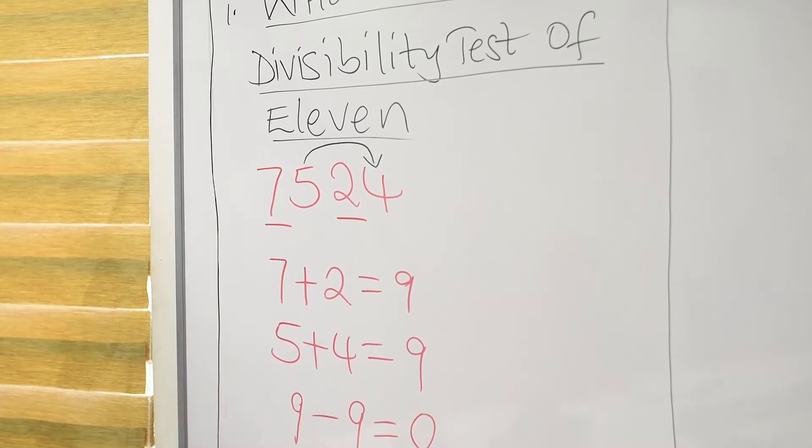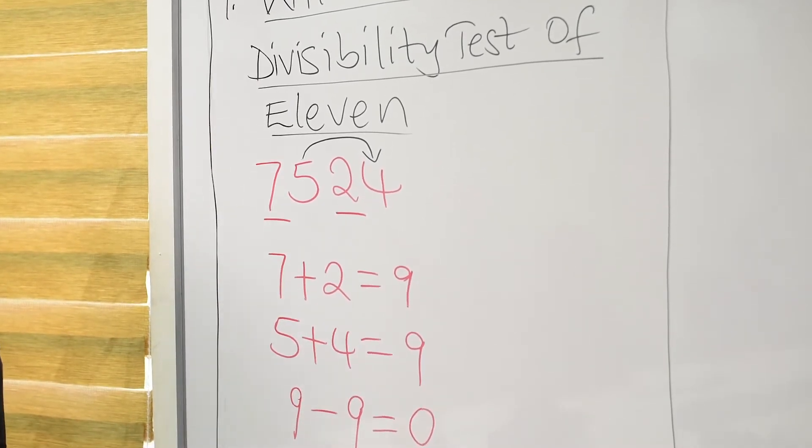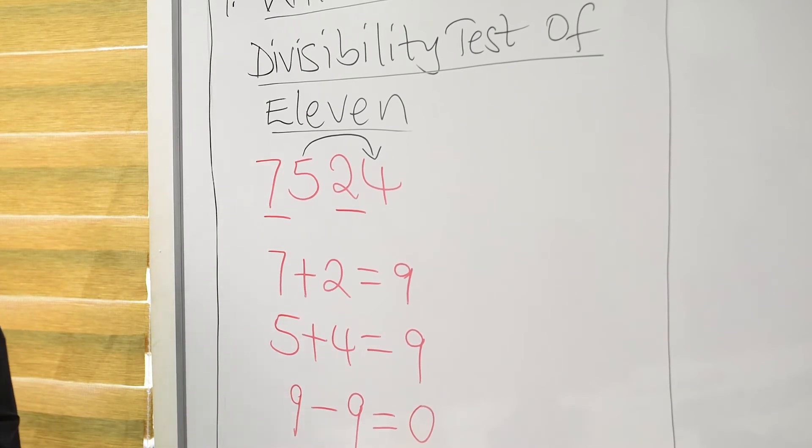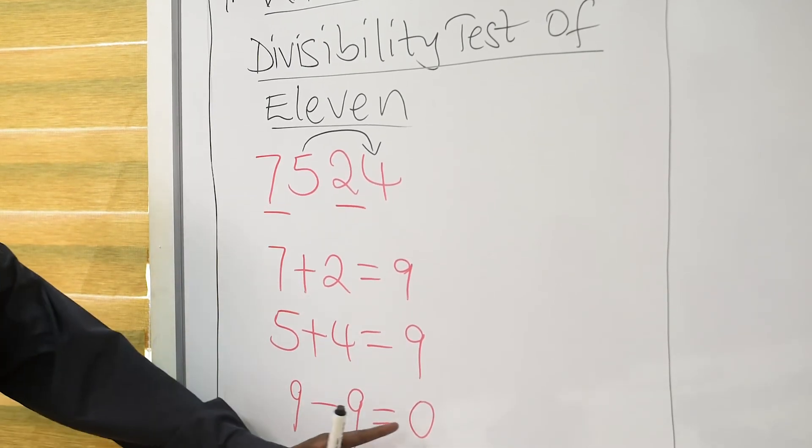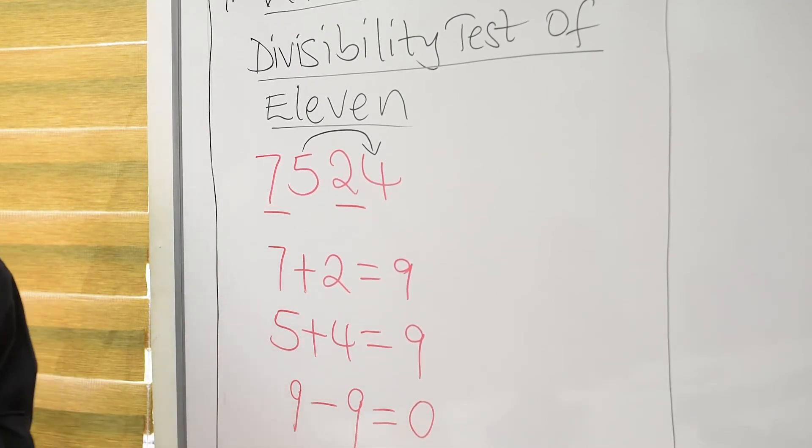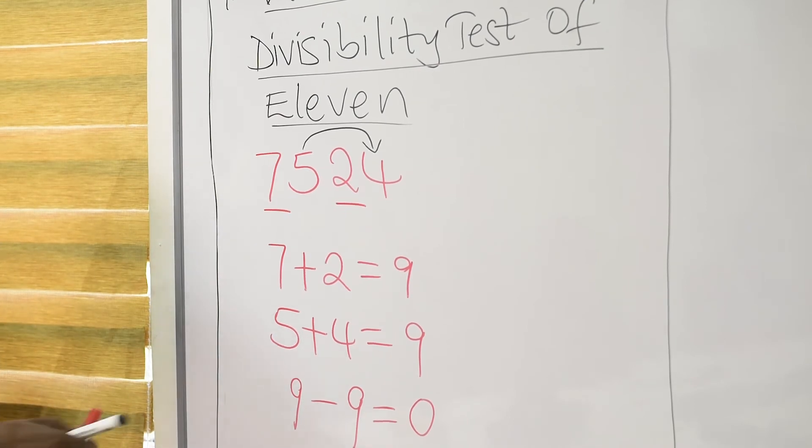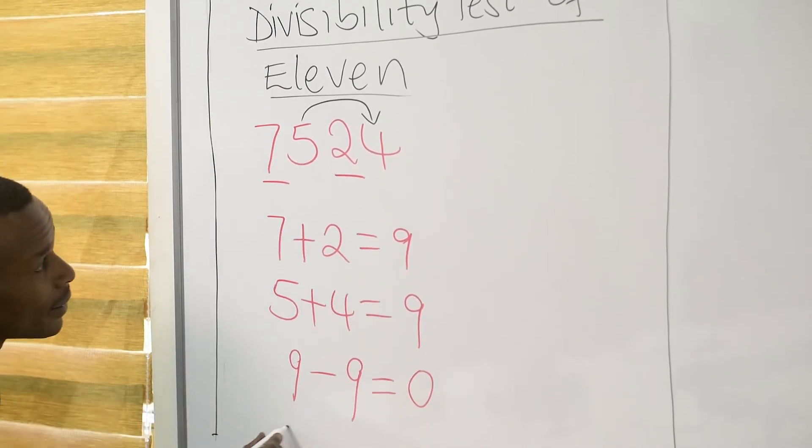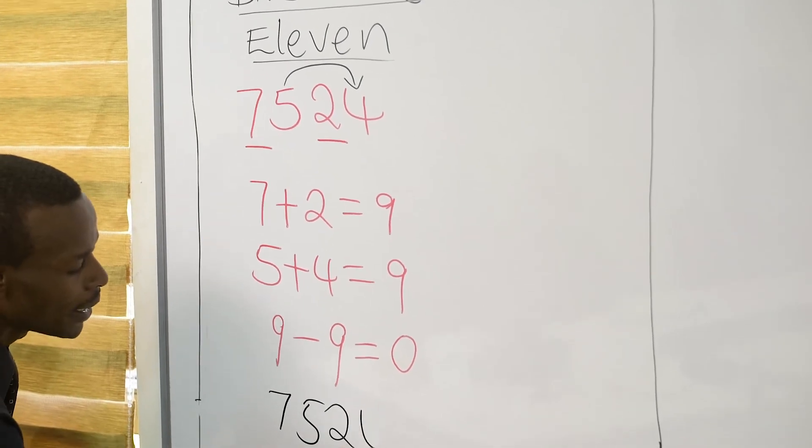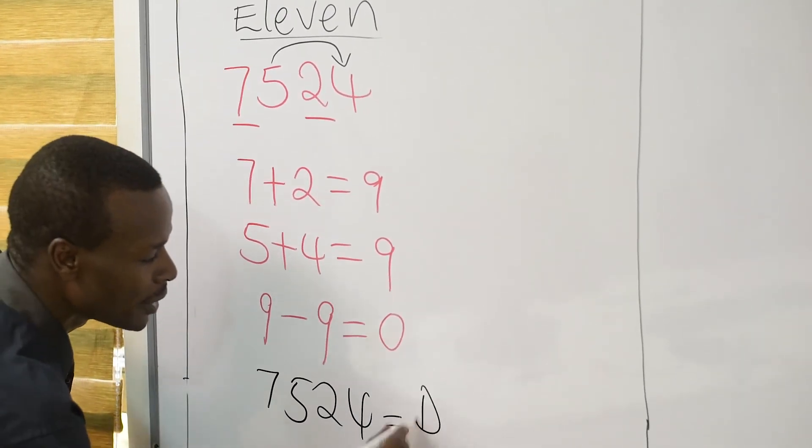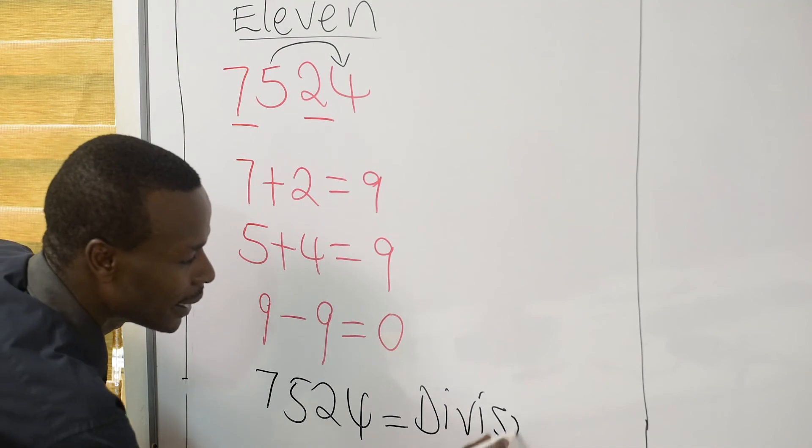And remember in the definition, a number is divisible by 11 if it will give us a difference of 0. And therefore, this being 0, the number 7,524 is therefore divisible by 11.